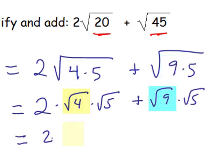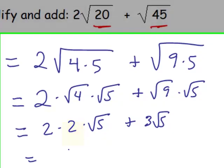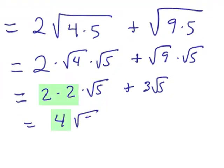And simplifying that, that's 2 times 2 times the square root of 5 plus 3 times the square root of 5. And ultimately, that's 4 times the square root of 5 plus 3 times the square root of 5.